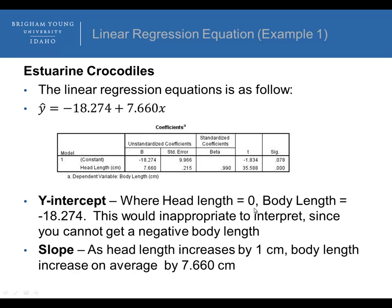How do we interpret that? When head length equals 0, body length equals negative 18.274. This is inappropriate to interpret since you can't get a negative body length, and the head length is never equal to 0 — so this is outside our range of data. The y-intercept is only interpretable if it's within or close to our range of data. However, the slope we can interpret: as head length increases by 1 centimeter, body length increases on average by 7.660 centimeters.